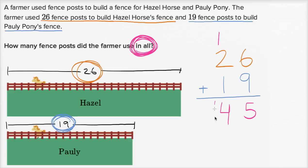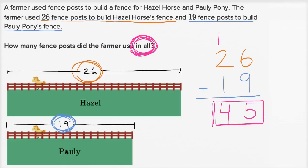So 45. How many fence posts did the farmer use in all? 45. Now, if you had tried to subtract 19 from 26, that would be what you'd do if they asked how many more fence posts did the farmer use for Hazel's fence than for Polly's — then you would subtract 19 from 26 to find the difference. But they didn't ask how many more fence posts were used for Hazel than for Polly, or how many fewer were used for Polly than Hazel. They said how many fence posts did the farmer use in all — and that's why we added.